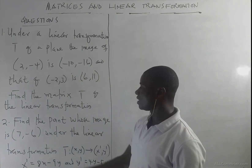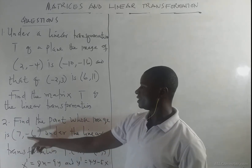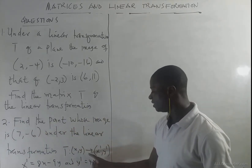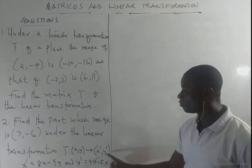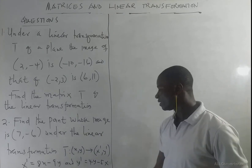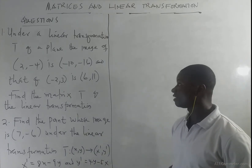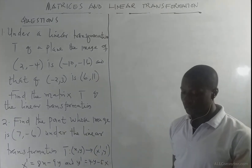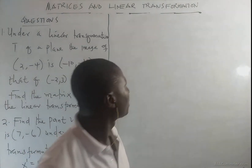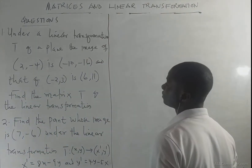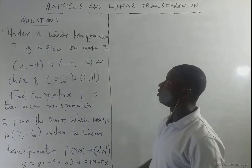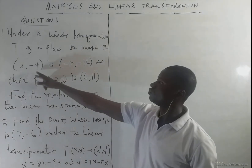Question two: we have to find the point whose image is (7, -6) under the linear transformation T of (x, y) mapping to (x', y'), where x' is 8x minus y, and y' is 4y minus 5x. We are first going to look at how to solve the first question.